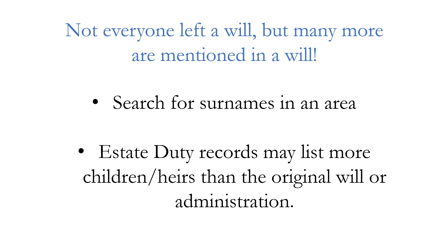Let me give you a couple more tips about using probate records to find complete families. Don't forget to search broadly — maybe dad didn't leave a will, but try mom, especially if she died after dad. Or try big brothers, sisters, aunts, or uncles. It's possible you will learn about extended family relationships in these wills. I would also search the probate indexes for all instances of my family surname in an area, just like with the church records — unless it's a really big town — because that can help you piece together extended families. Additionally, estate duty records, the inheritance tax paperwork, may actually list more heirs or children than the actual probate records themselves, so they're worth a look.